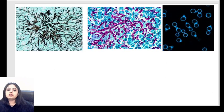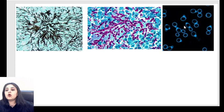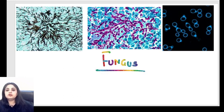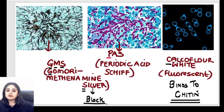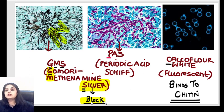Spotter number two — actually spotters two, three, and four are three spotters brought together. One has a black color, one is pinkish, and one is from a fluorescent microscope. These are three different stains but for one common thing — all of them are used to denote a fungal organism. The first one, in which all the fungal hyphae appear black, is known as GMS — Gomory's methenamine silver stain. Silver tends to give a black color, so remember: silver stain equals black color.